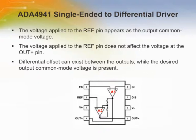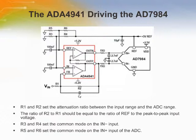The negative input of A1 is brought out to pin 1, FB, allowing for user-programmable gain. The inverting op-amp, A2, provides accurate inversion of the output of A1, producing the inverting output signal. This circuit shows the ADA4941 single-ended to differential driver driving the differential input of an AD7984. R1 and R2 set the attenuation ratio between the input range and the ADC range. R1, R2, and CF are chosen dependent on the desired input resistance, signal bandwidth, anti-aliasing, and noise contribution.